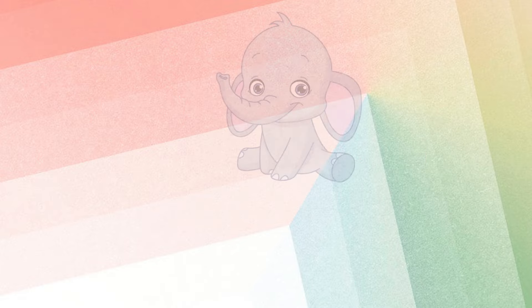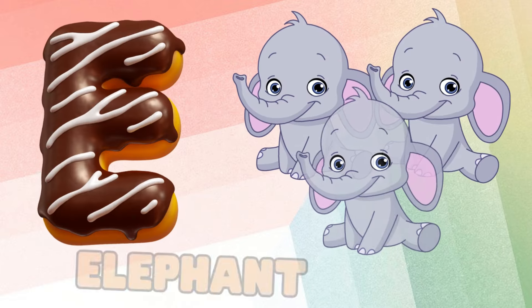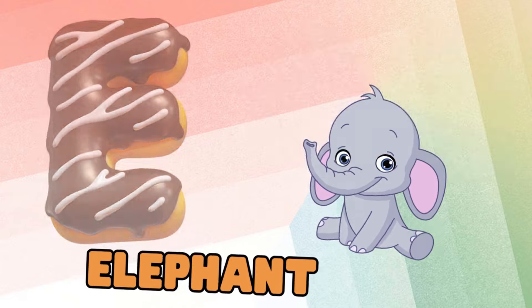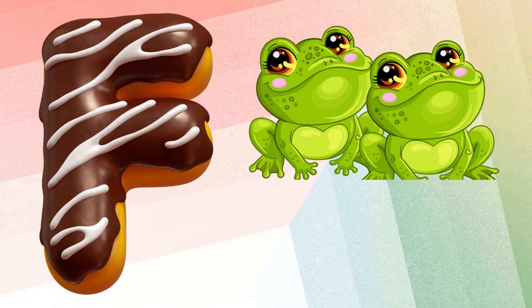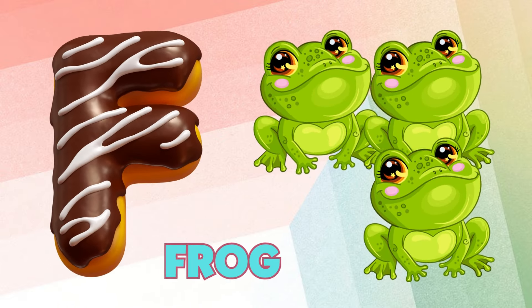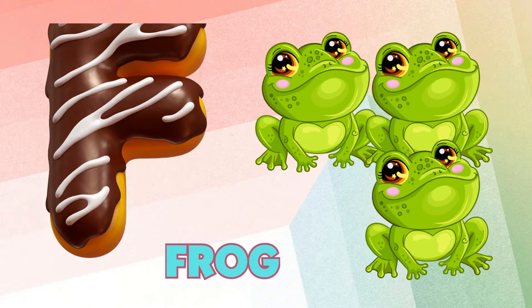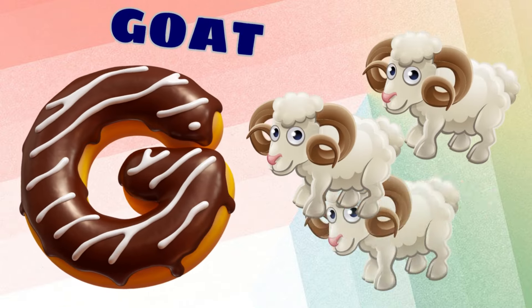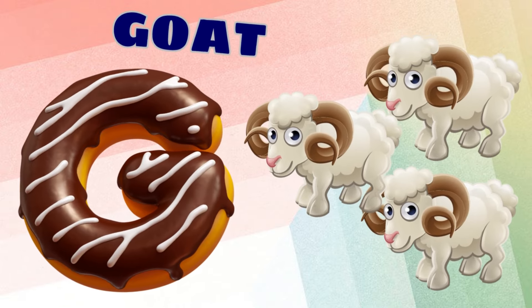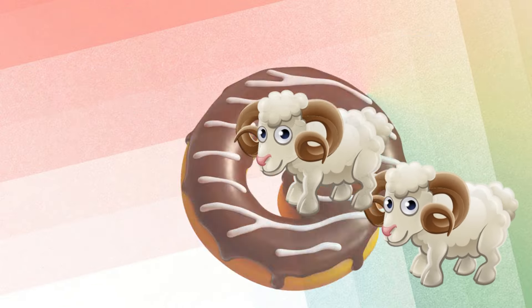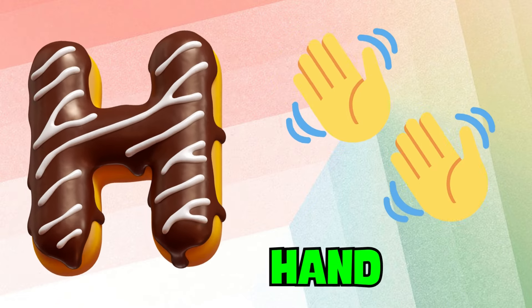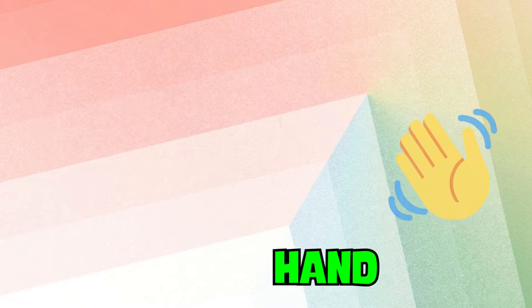E is for elephant, e-e-elephant. F is for frog, f-f-frog. G is for goat, g-g-goat. H is for hand, h-h-hand.